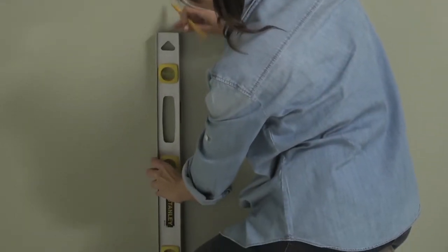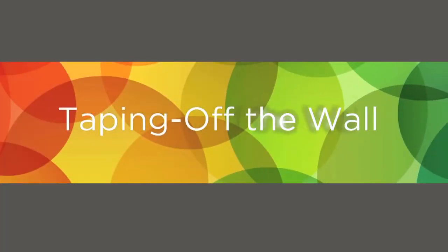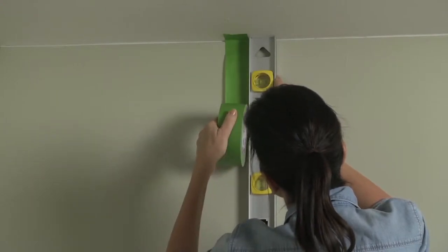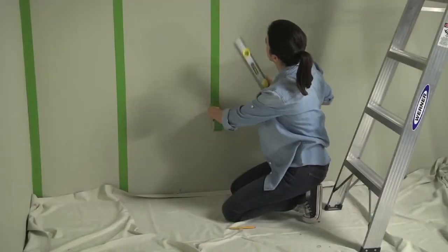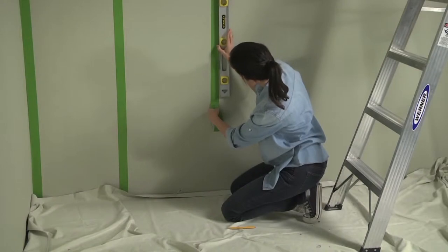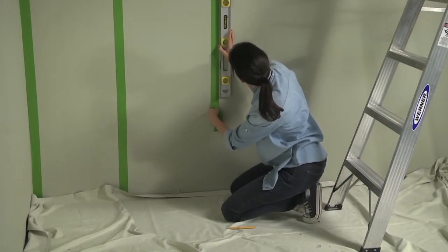Using a level as your guide, lightly mark the edges of each strip down the length of the wall. Apply your tape starting at the ceiling and work your way down. Use the pencil marks and a level as your guides to make sure the lines are straight and plumb.